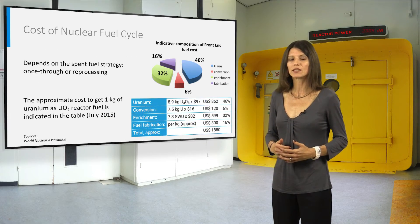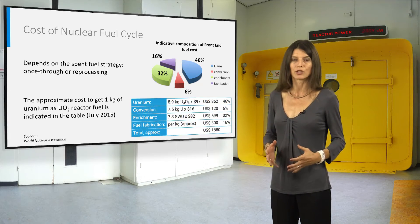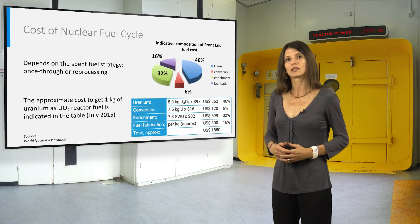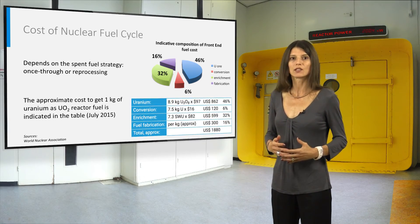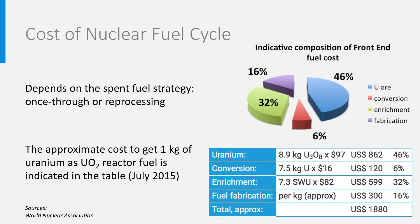The fuel cycle costs are divided into the front-end, containing uranium supply, conversion, enrichment and fuel fabrication, and the back-end, which contains reprocessing, conditioning and final geological disposal. They vary widely with the fuel cycle strategy — once through or reprocessing. Disposal costs depend on geological conditions and on the repository features, and until now no industrial reference costs are available on this topic.